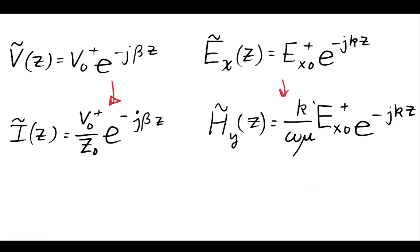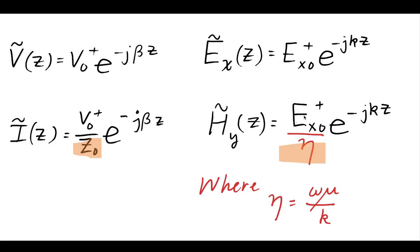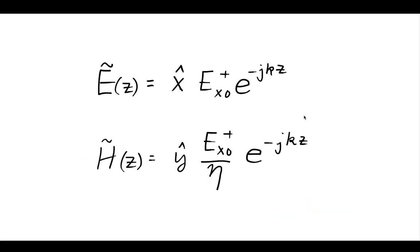And so we'll define this eta. Instead of taking this k omega mu, we're going to define an eta, which is an intrinsic impedance. And we can see that the characteristic impedance and the intrinsic impedance kind of serve a very similar function.